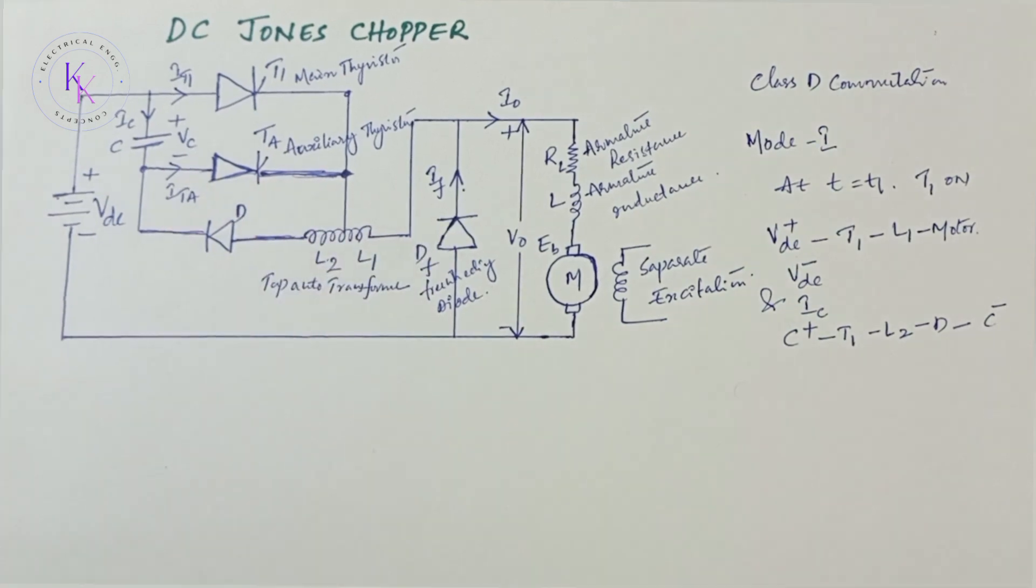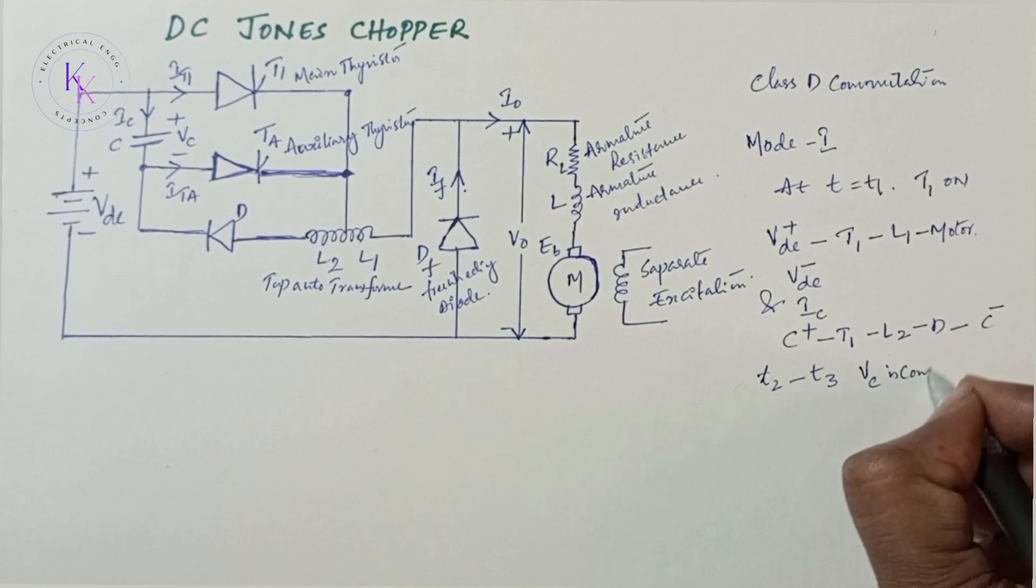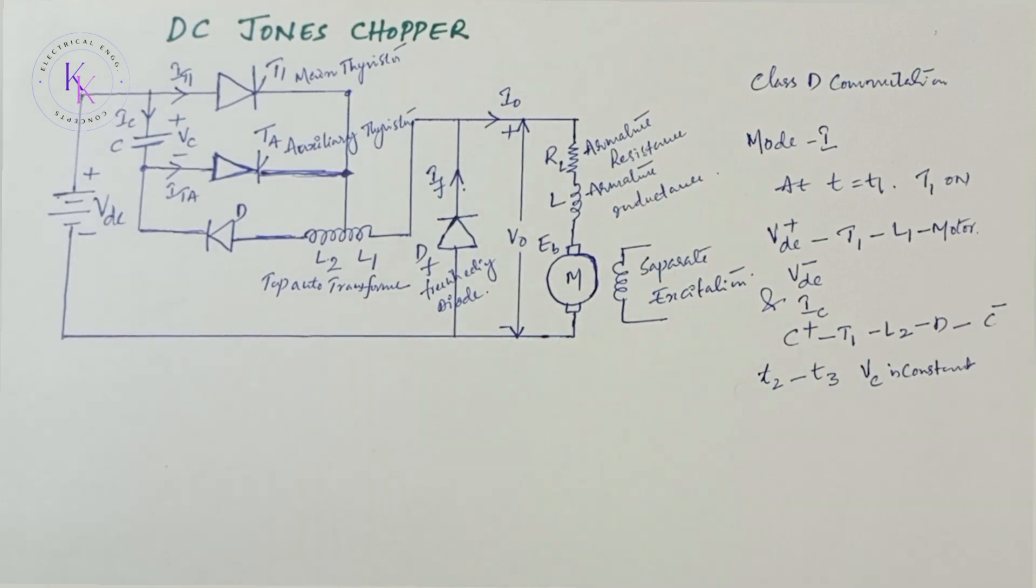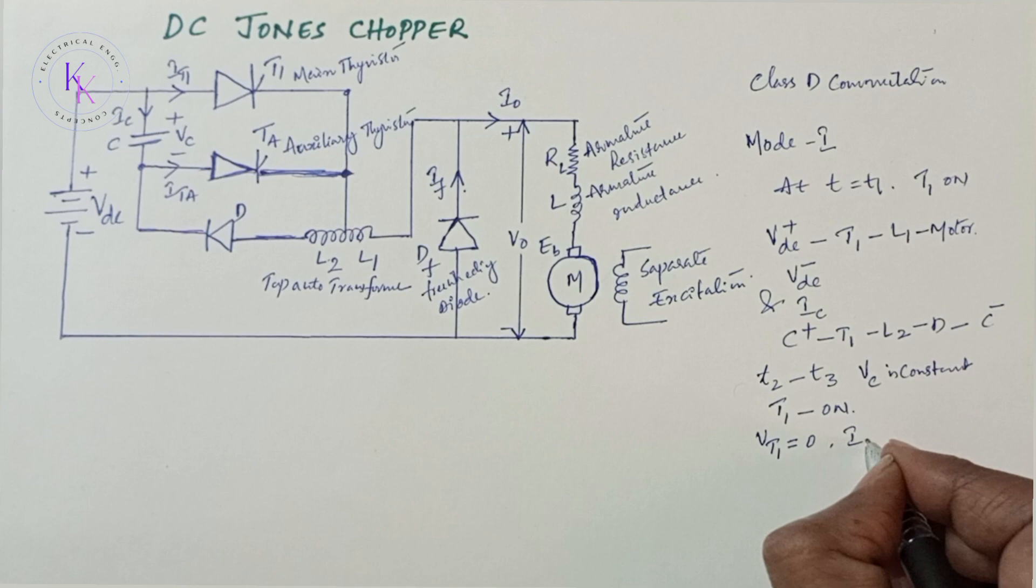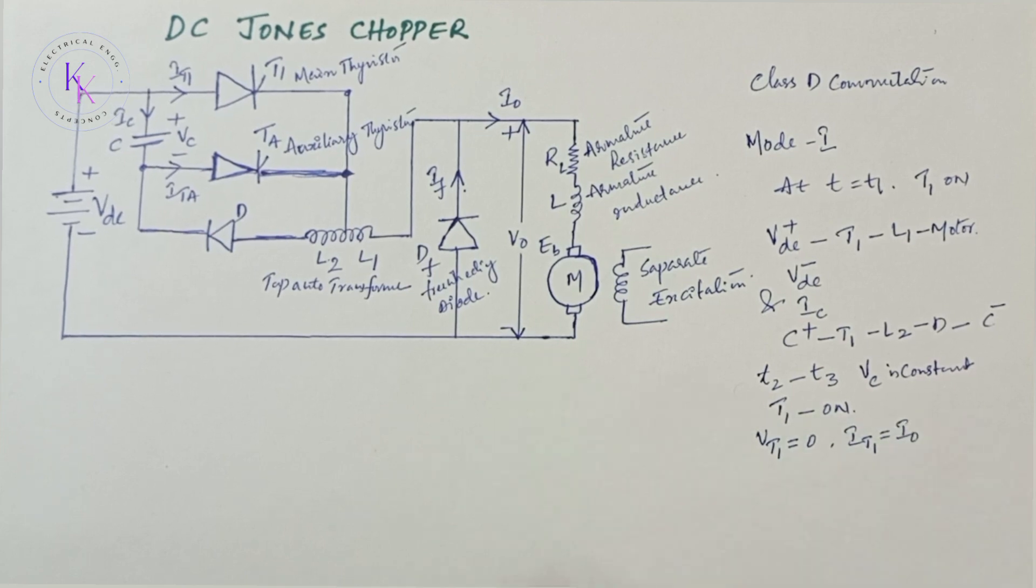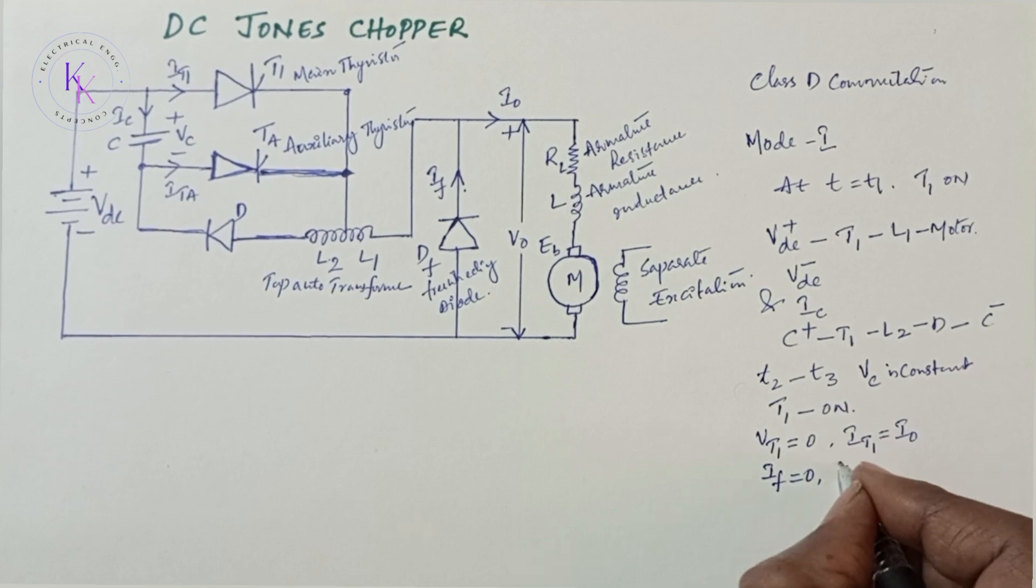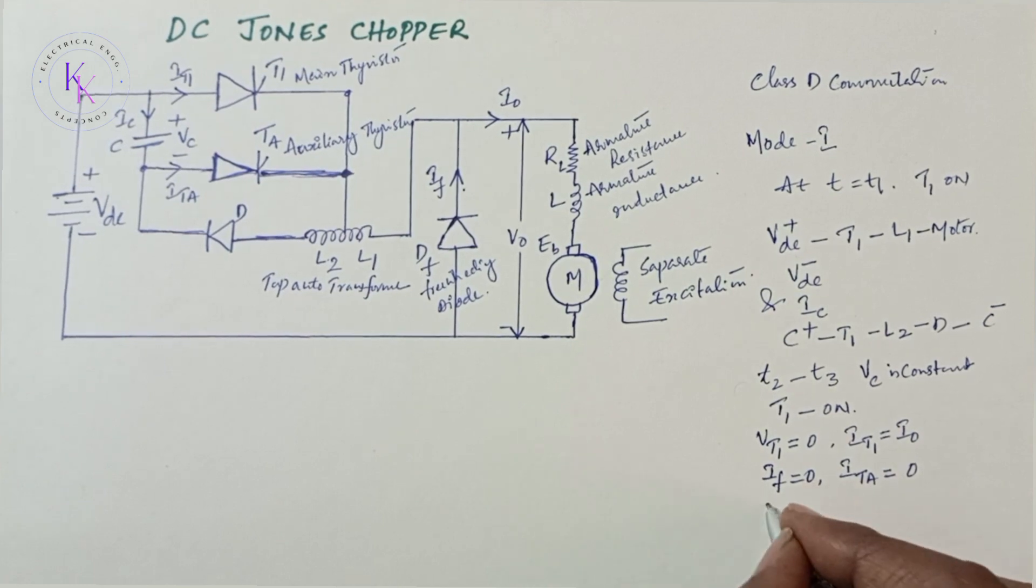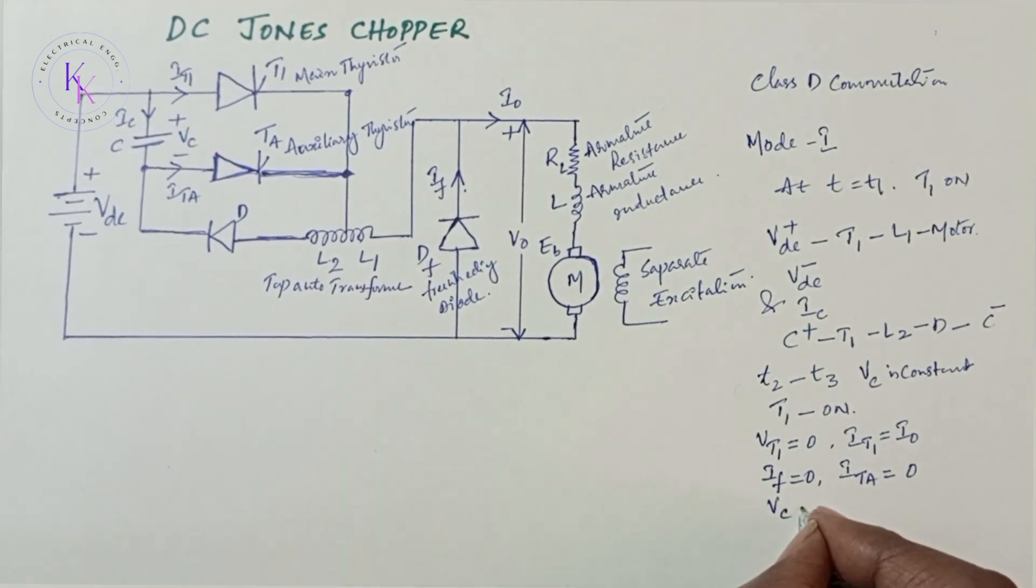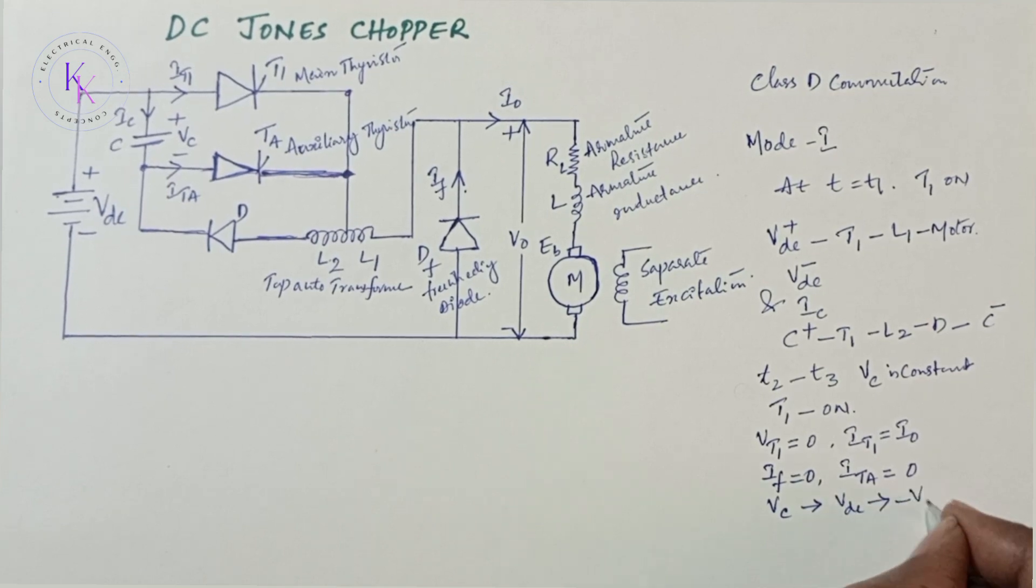From T2 to T3, voltage through the capacitor is constant and T1 continues to conduct. In this mode, the voltage across thyristor T1 equals 0, current through T1 equals I0, freewheeling diode current equals 0, auxiliary thyristor current equals 0, and the voltage across capacitor shifts from VDC positive to VDC negative.